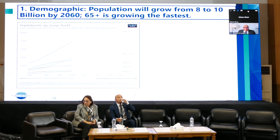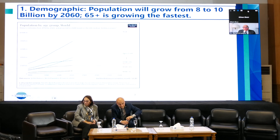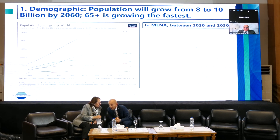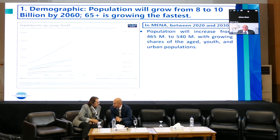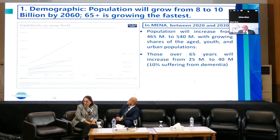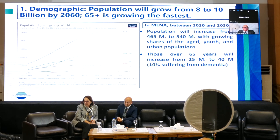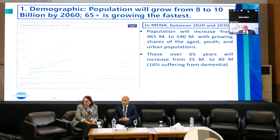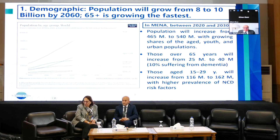The light brown is age 65 plus, followed by age 25 to 64. In MENA, between 2020 and 2030, population will increase from 465 million to 540 million. Those over 65 years will increase from 25 million to 40 million, and 10% of them will suffer from chronic conditions — this has implications for health services. Those aged 20 to 29 years will increase from 168 million to 162 million, with higher prevalence of NCD risk factors.